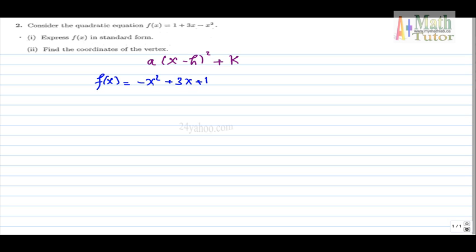I wrote it in decreasing order from the highest degree to the lowest, and then we are supposed to take minus common for the first two terms. So we get x squared minus 3x.